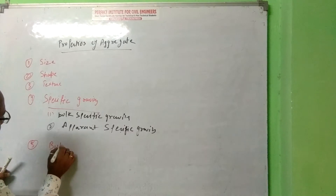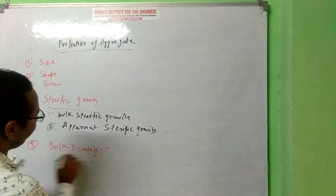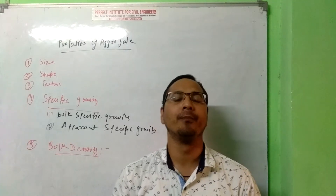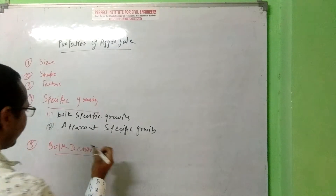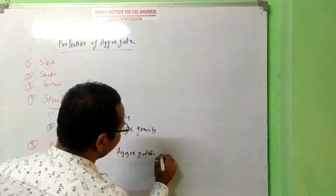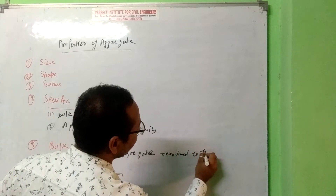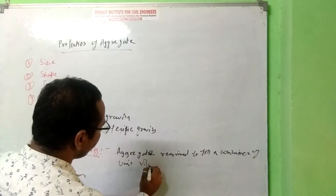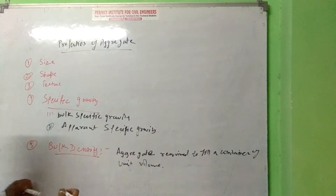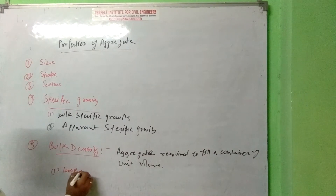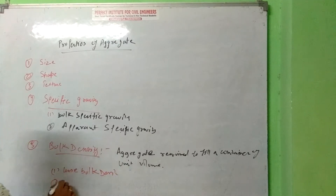The fifth property is bulk density. Bulk density is defined as the aggregate required to fill a container of unit volume — that is called bulk density. It is also categorized into two types: loose bulk density and rodded bulk density.